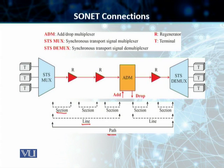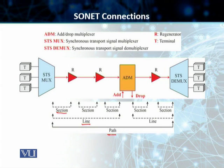Then you've got a line. A line is a portion of the network between two different multiplexers — an STS-MUX and an add-drop multiplexer, or an add-drop multiplexer and another add-drop multiplexer, or an ADM and the STS-DMUX. The optical link between your MUX and DMUX is called a line.